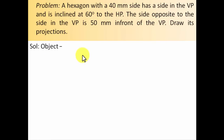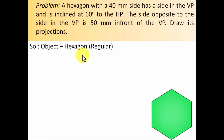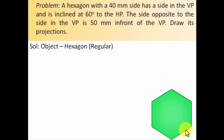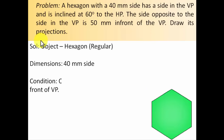The object is a regular hexagon with a 40mm side, so all six sides are 40mm each. This regular hexagon has six corners, and all the internal angles are equal to 120 degrees.